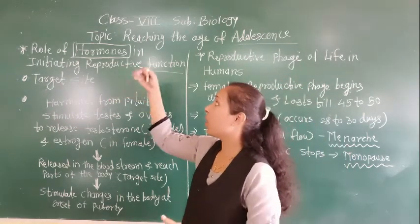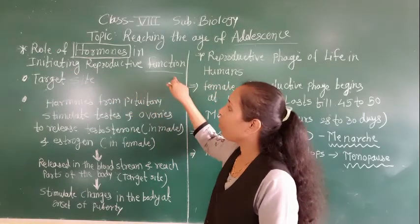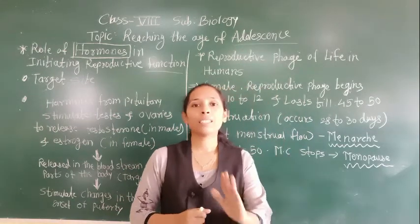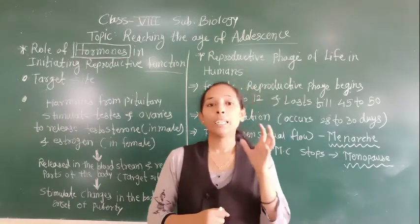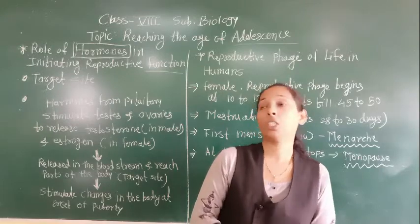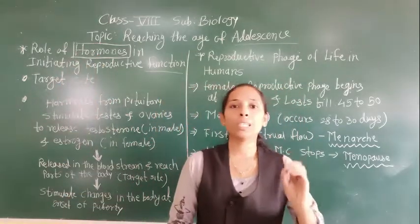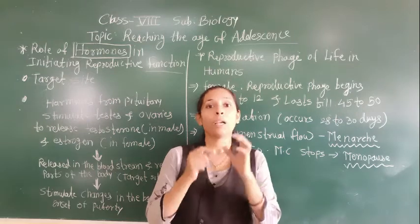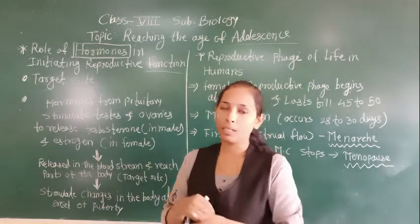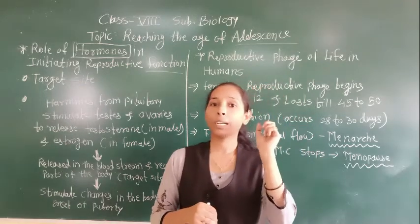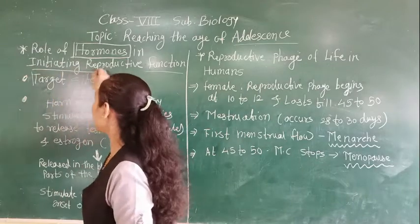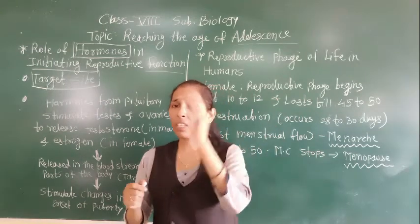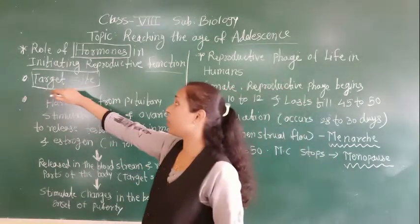These hormones initiate reproductive functions. The endocrine glands, also called ductless glands, release their secretion — that is, hormones — into the bloodstream. With the help of the bloodstream, those hormones reach their particular body part or organ, and that particular body part or organ is called the target site.